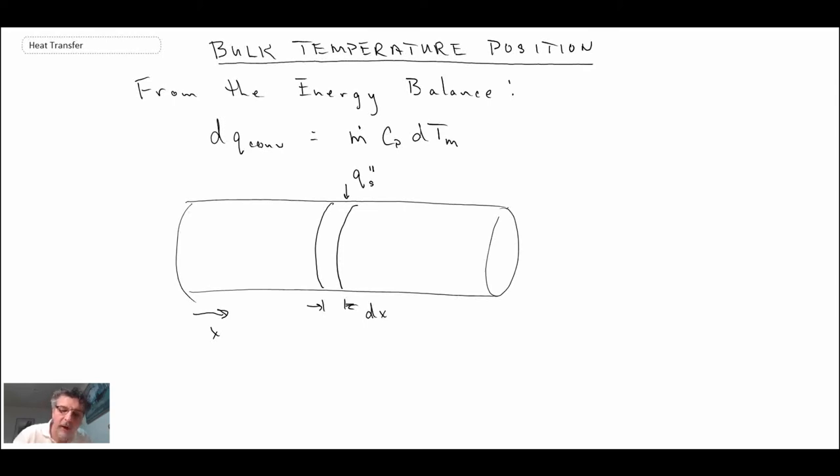Now, what we can write—knowing this is one equation that we have—we can also do a balance based on the amount of convective heat transfer taking place. Let me go to the next slide. DQ convection can also be expressed as our surface heat flux multiplied by P, the perimeter of the pipe, times dx,